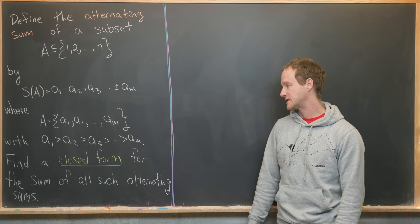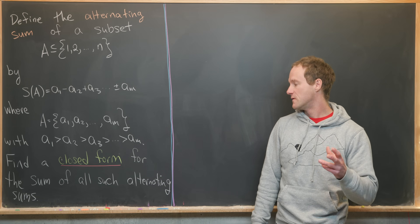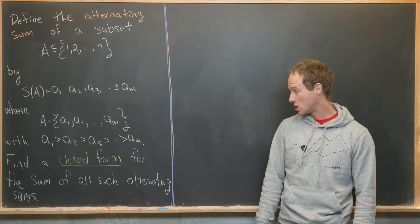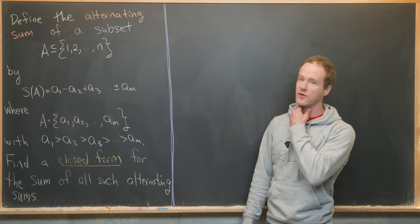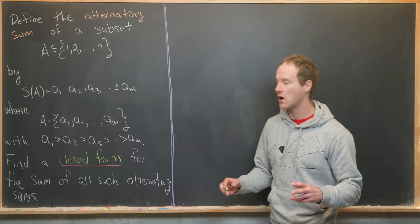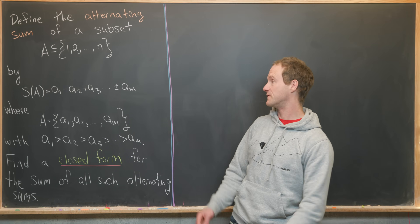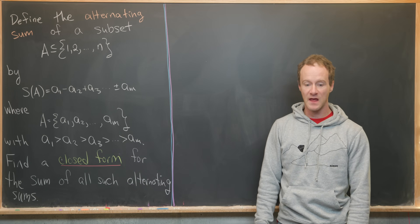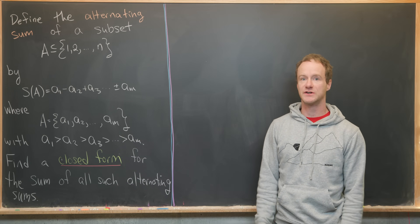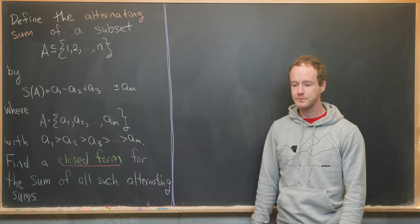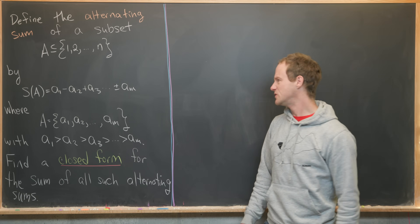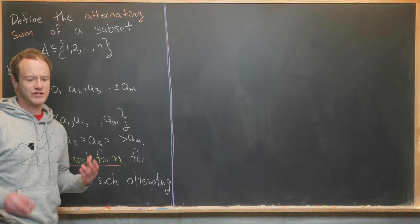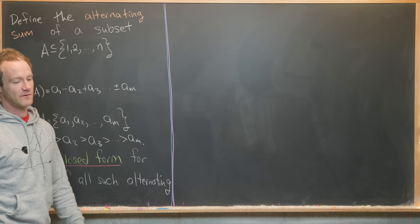Our goal is to find a closed form for the sum of all such alternating sums. In other words, we calculate all of the alternating sums over all of the subsets of 1 through N, then we add up all of those alternating sums and see what number we get. Let's do a little exploration example first before we jump into the full solution.